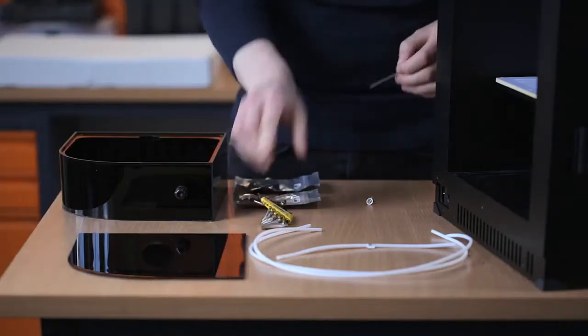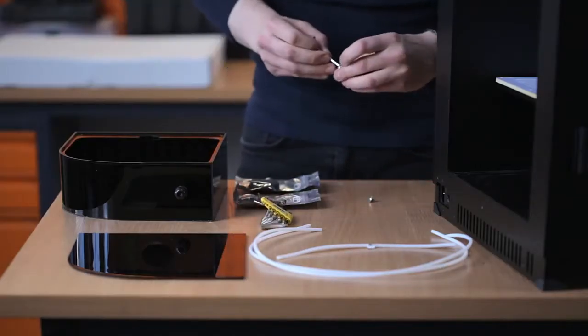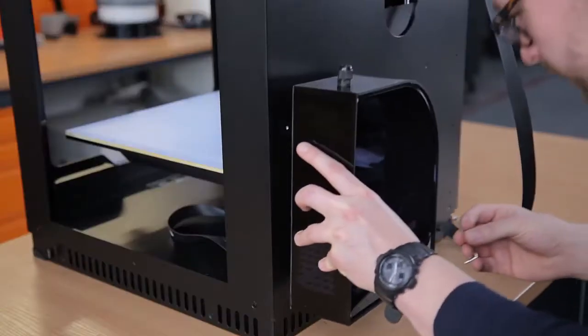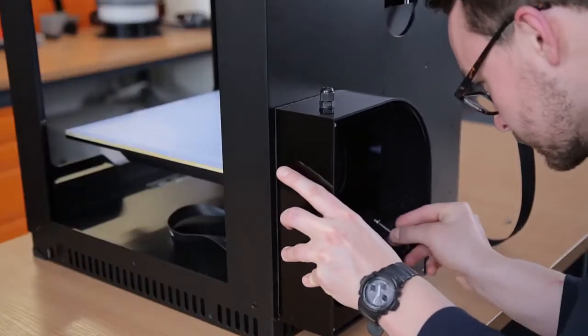Now, you can unpack the filament box and secure it to the back of the printer with two screws. One at the bottom of the box, and the other at the top.